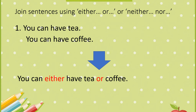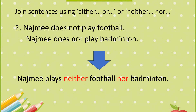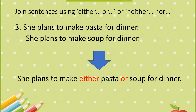Number one: 'You can have tea' and 'You can have coffee' — we use either/or: 'You can either have tea or coffee.' Number two: 'Najimi does not play football' and 'Najimi does not play badminton' — we use neither/nor: 'Najimi plays neither football nor badminton.' This means Najimi doesn't play both of them.